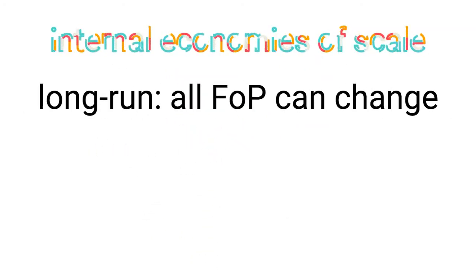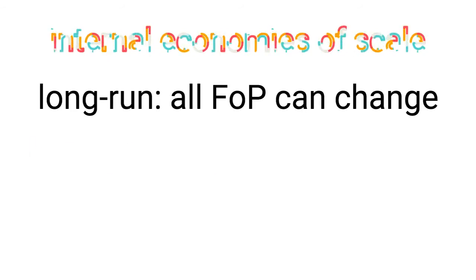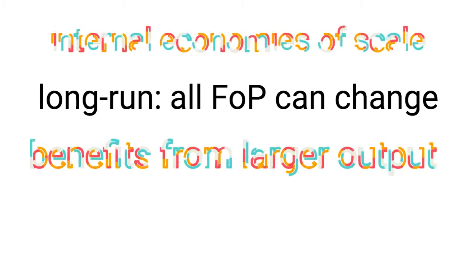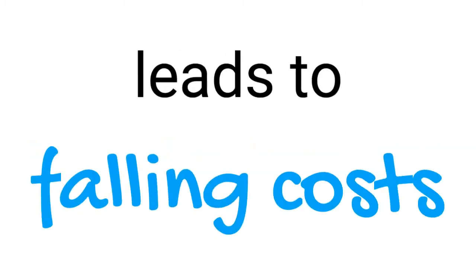Remember, economies of scale occur in the long run when we can change all our factors of production. The theory says that, apart from distributing our costs among a larger number of units in the short run, there are some intrinsic benefits from becoming a larger company in the long run.